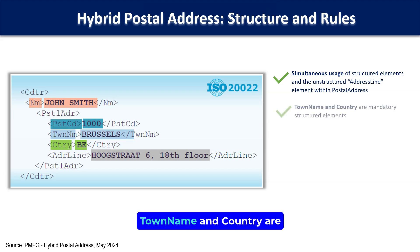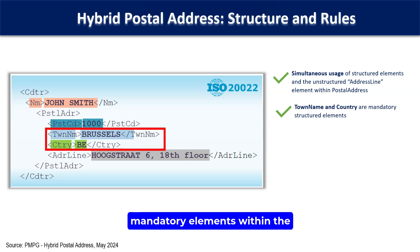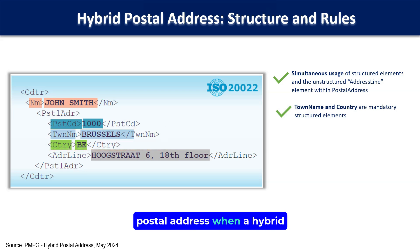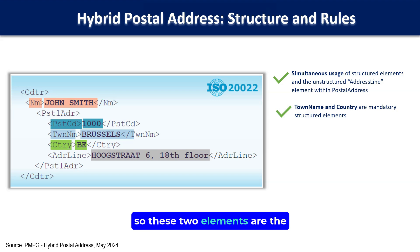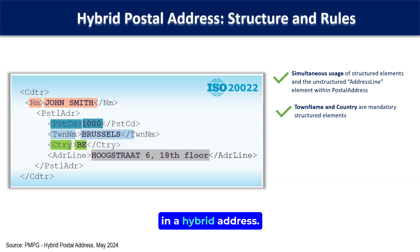Town name and country are mandatory elements within the postal address when a hybrid address is used. So these two elements are the mandatory structured elements in a hybrid address.